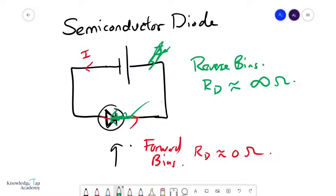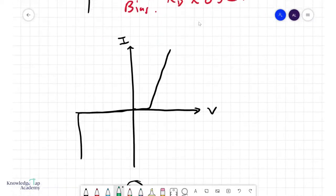So, there you go. Diodes simply allow the current to flow only in one direction. So, how does the I-V graph of this look like?